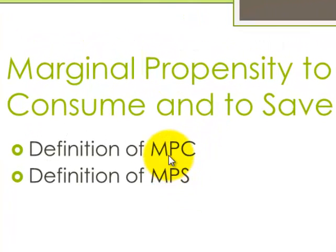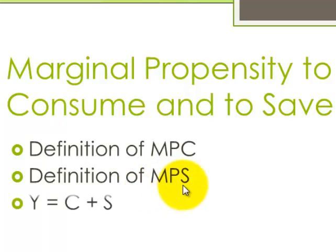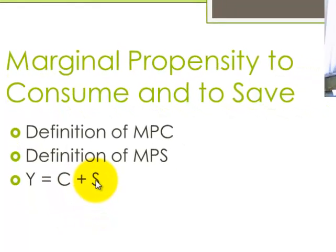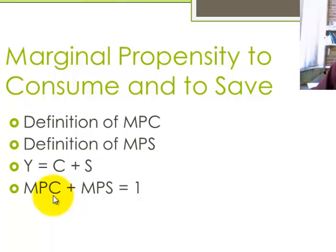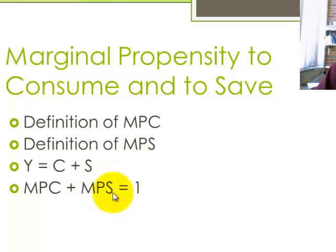What that means is that if I'm going to earn an extra dollar, what proportion am I going to consume — spend — and what proportion of that am I going to save? Let's do some maths here. The amount of income that I get can either be spent on consumption or saved in the banks. The marginal propensity to consume — let's say the proportion that I spend of my income is 80% — therefore the remaining 20% I'm going to save. 80 plus 20% is equal to 1, 100%.